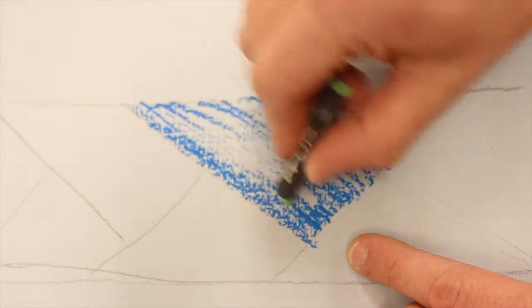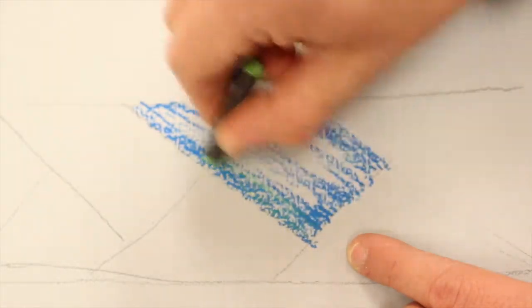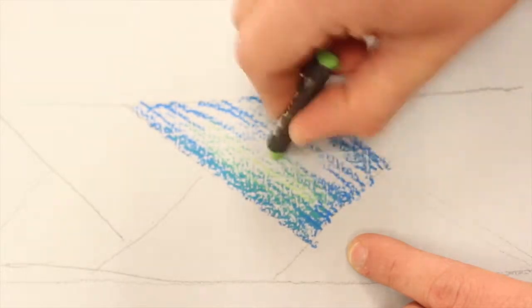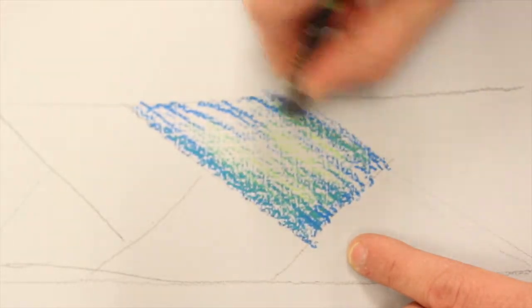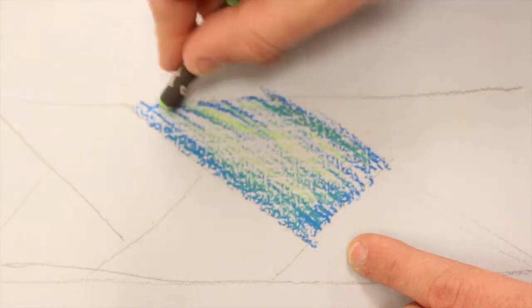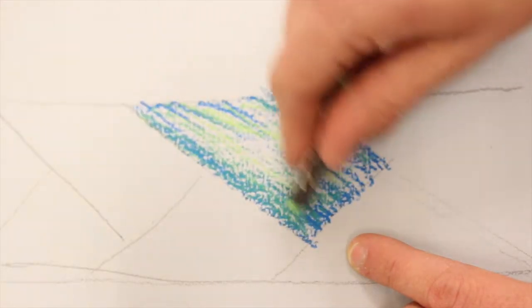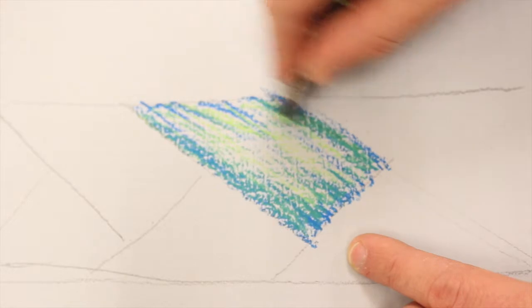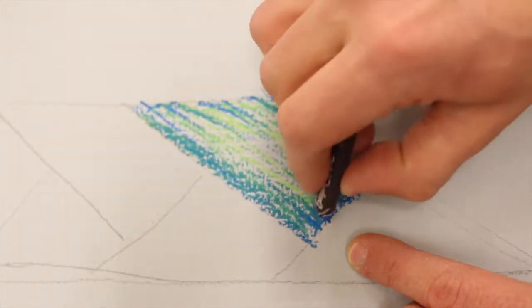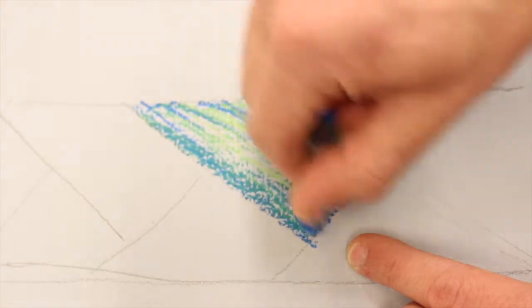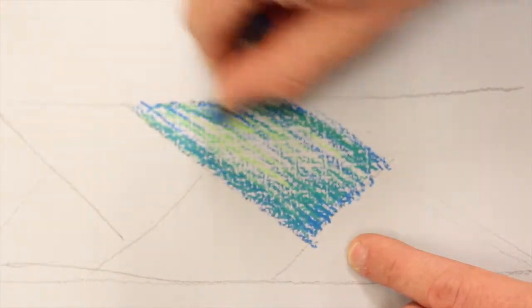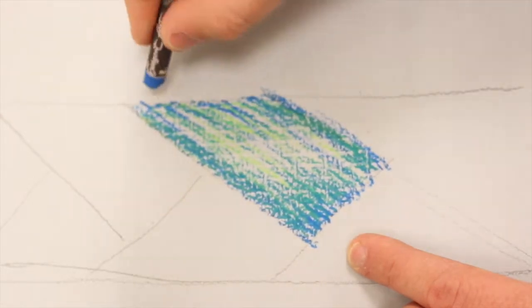Now I can start to add in some of those greens. The green on top of the blue is going to look really nice. A lot of times if you just put one color down on the paper it just looks blah. Sometimes you just have to build up some of this here. I'm going to go back in now because the blue on top of the green I think looks really nice. I'm just going back and forth between dark and light.